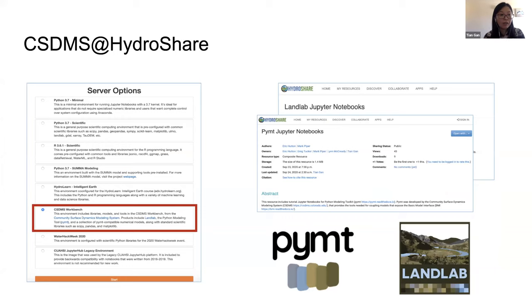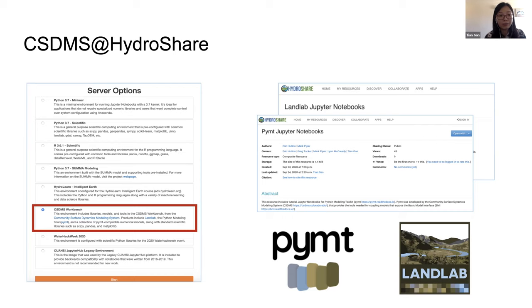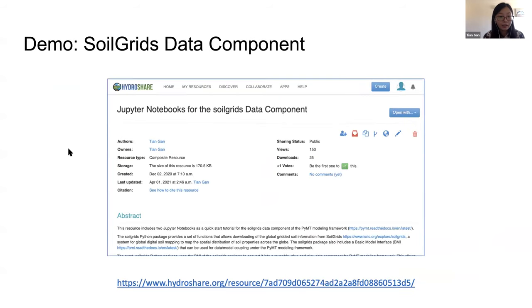HydroShare has social functions to encourage collaboration, including resource access control — you can restrict access to trusted HydroShare users or make data sets public so anyone can discover and access them. HydroShare also supports several web applications for data analysis, visualization, and modeling, including the CUAHSI JupyterHub. In the CUAHSI JupyterHub there are several server options — one is the CSDMS workbench, which has PyMT and LandLab installed, plus scientific Python packages like Matplotlib, xarray, and NumPy. Tutorial notebooks for PyMT and LandLab are available on HydroShare so people can discover and run them without installing anything.